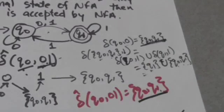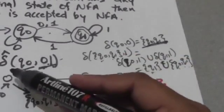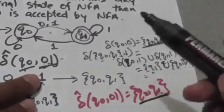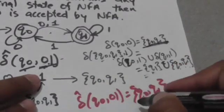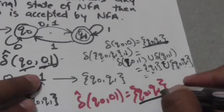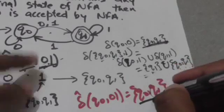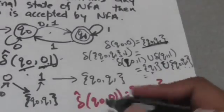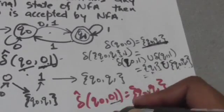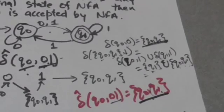The output of the extended transition function in this case is the set {q0, q1}, where q1 is the final state of the NFA. Since the set contains the final state q1, the string 0 1 is accepted by this NFA. Thank you very much.